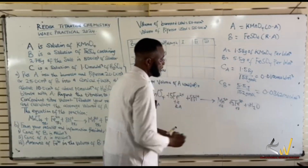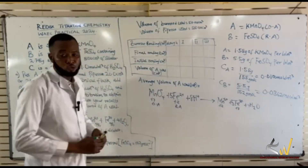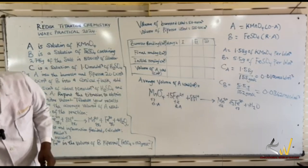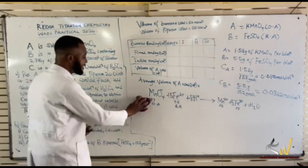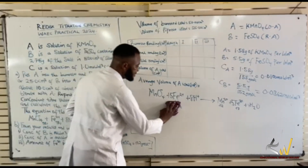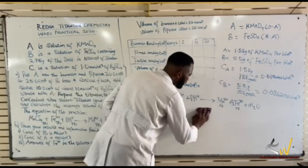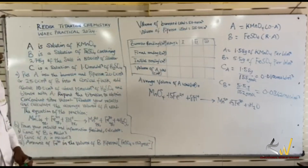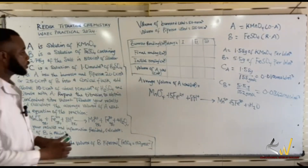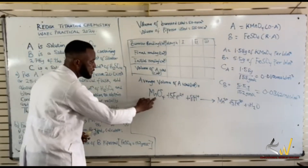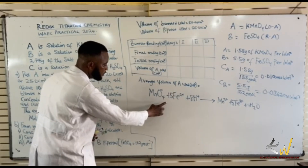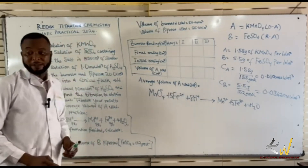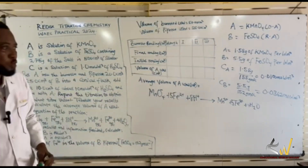In the balanced equation, you will see 5 on each side. This is the kind of equation we will see on that day, so the mole ratio of MnO4⁻ to Fe²⁺ is 1:5. Let's go straight to the question.